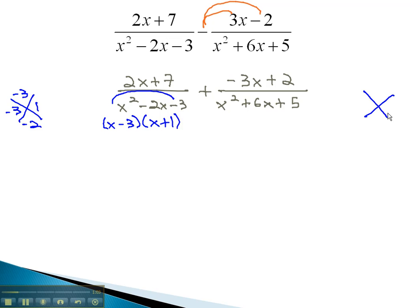The second denominator, we're multiplying to AC, or 5, and adding to 6. This is done with 5 and 1. We have x plus 5, times x plus 1.